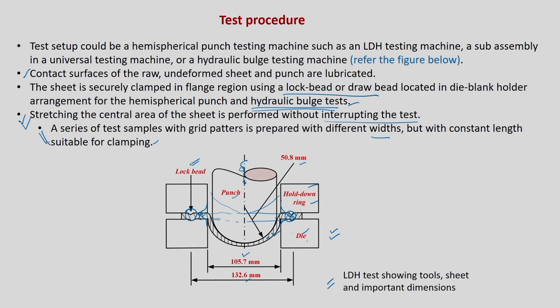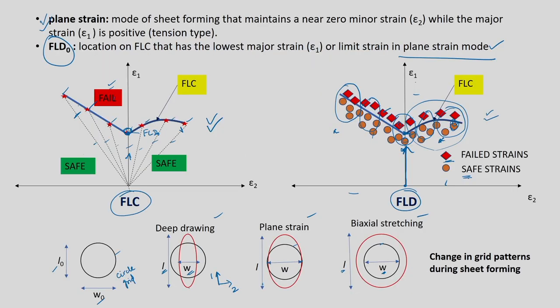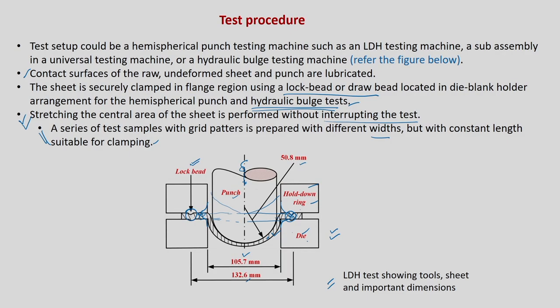A series of strips of one particular material with different widths but constant length will be deformed using this setup to get the forming limit curve. As shown in the diagram, I have indicated 1, 2, 3, 4, 5, 6, 7 — you can use 7 different widths. You can also use widths in between to get a more accurate curve. About 7 different widths can be changed to get limit strains at different strain paths, keeping the length constant so you can properly clamp the sheet.